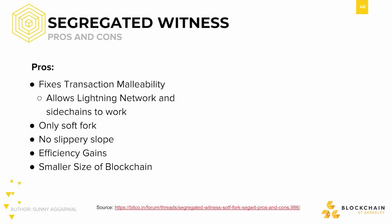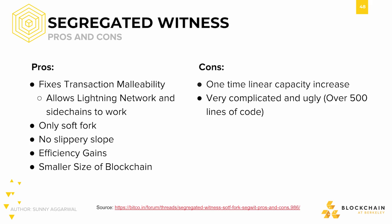As for cons, SegWit is only a one-time linear capacity increase. Since we can only remove signatures from transactions once, that's where the one-time aspect comes from. The increase is only linear because decreasing transaction size by removing signatures only increases the number of transactions in a block linearly with respect to block size. Another con is that in implementation, SegWit isn't the prettiest — it's proven to be very complicated and ugly, with over 500 lines of code.